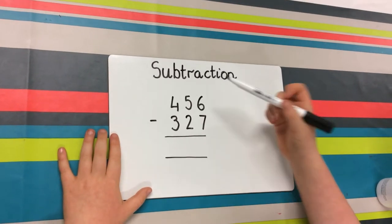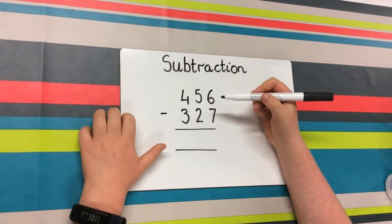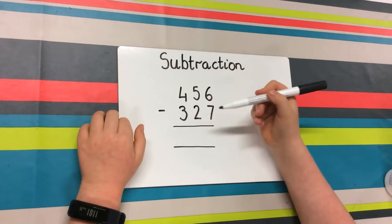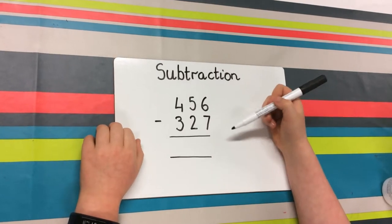I'm going to be showing you how to do a subtraction sum. The sum is 456 minus 327.